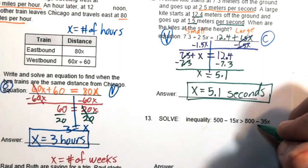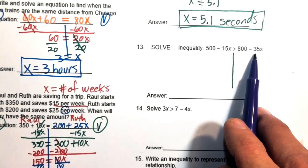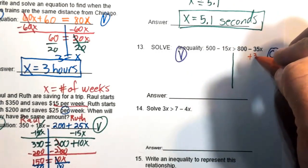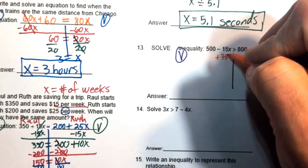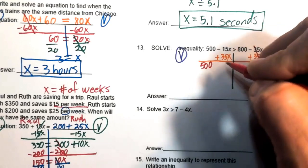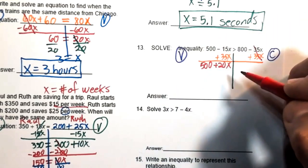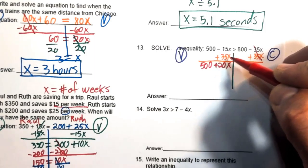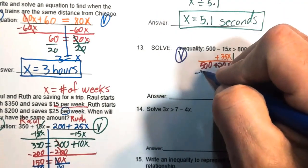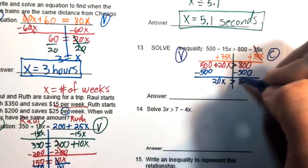Number thirteen: solve the inequality. Move the negative 35x to the left side by adding 35x to both sides — this gives a positive coefficient. The negative 35x cancels; negative 15x plus 35x equals positive 20x, since 35 is larger and 35 minus 15 is 20. Bring down the inequality sign and the 800. Subtract 500 from both sides: 800 minus 500 equals 300.